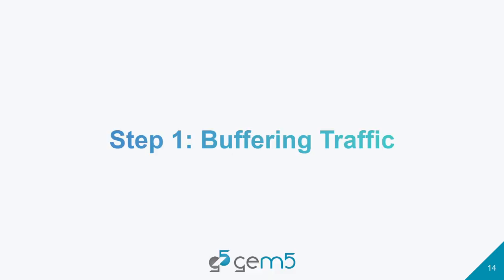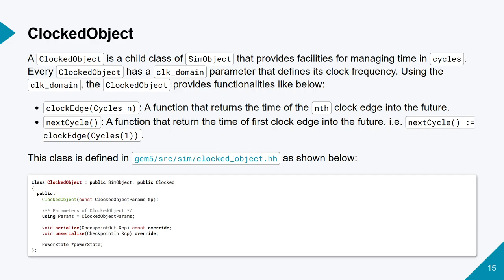Before we start writing code, I want to talk about clocked object. Clocked object is a class that inherits from SimObject. It lets you see time in the concepts of cycles, not ticks - though it'll return you ticks, you can ask it to give you the time of the second cycle in the future, or the next cycle in ticks. It rids you of having to deal with ticks and convert those to clocks. The clocked object has a parameter called clock domain, where you set the clock frequency. We'll call functions like next cycle or clock period to get these values in ticks.